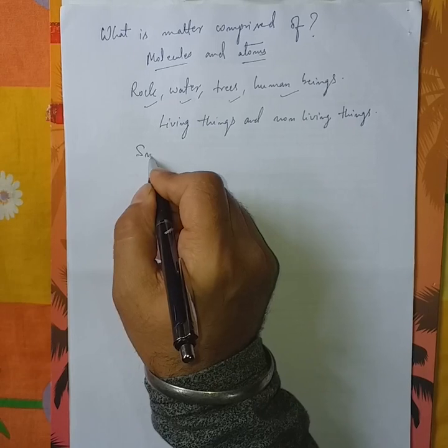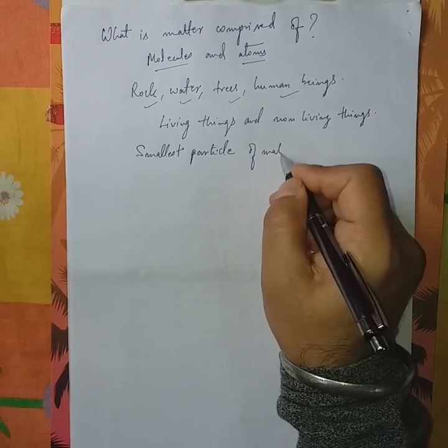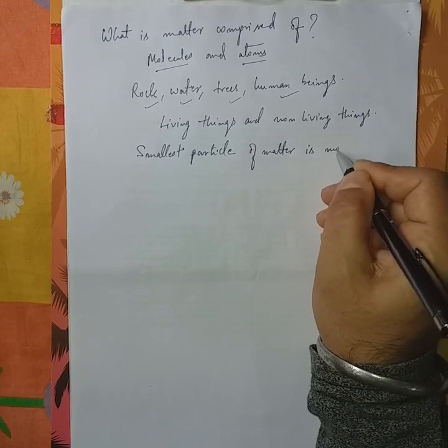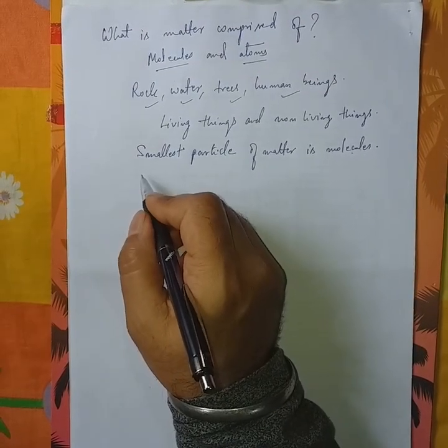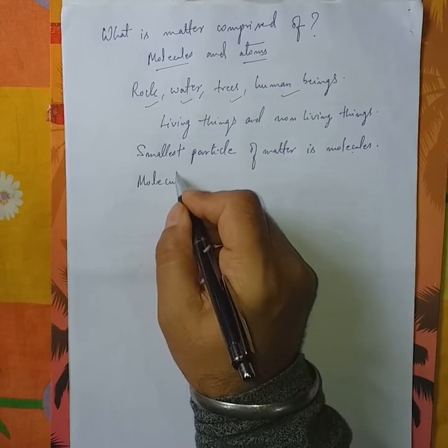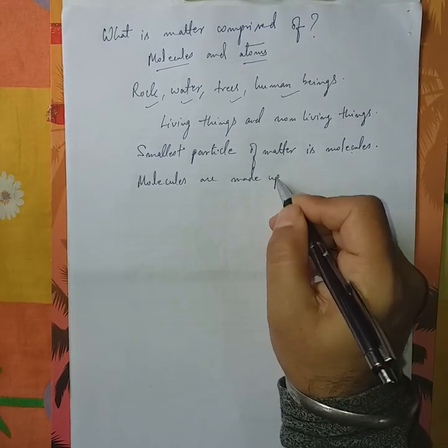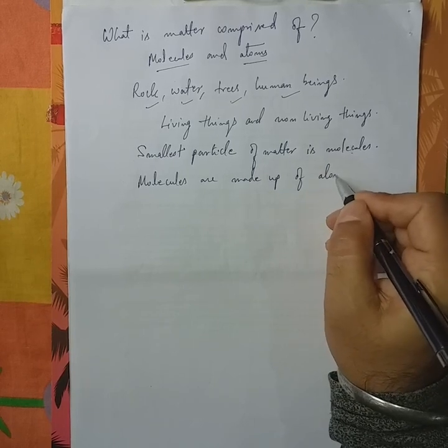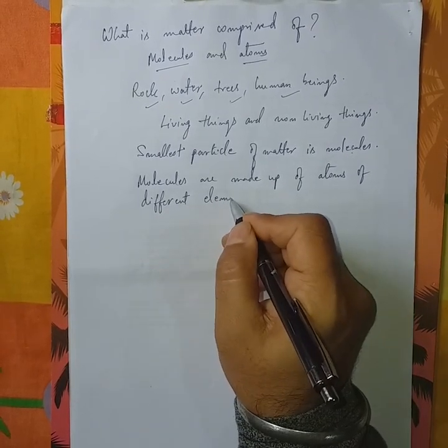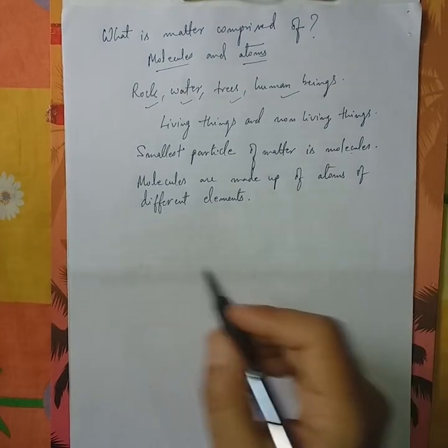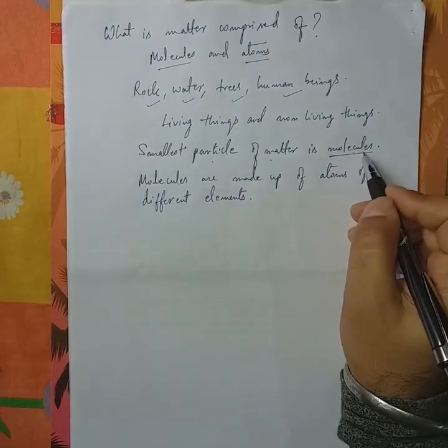The smallest particles of matter is molecule and molecule is made up of atoms. The smallest particle of matter is molecule. And molecule is made up of atoms of different elements.